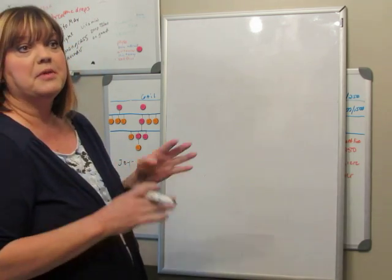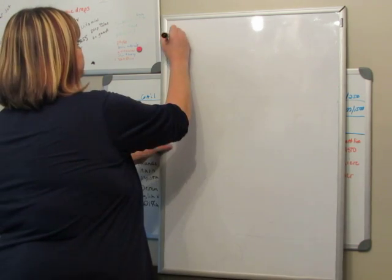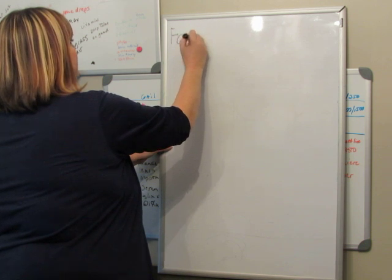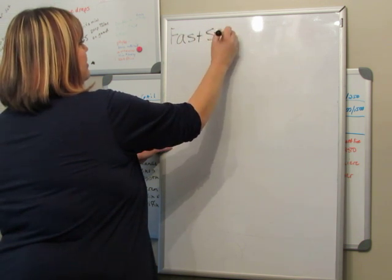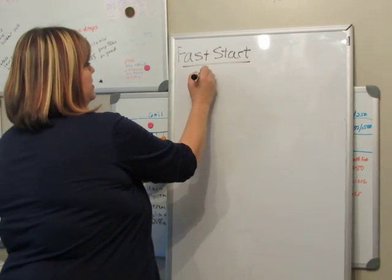There's three ways in the beginning that you can pay with doTERRA. The first way is called Fast Start. So this is your first check that you will get, and this is weekly.